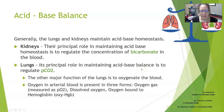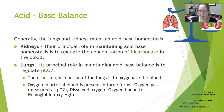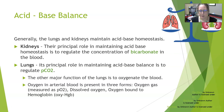The lungs' principal role in maintaining acid-base balance is to regulate the partial pressure of CO2 as a gas. CO2 is considered an acid, and the lungs can either breathe out more CO2 by increasing the breathing rate or retain more CO2 by decreasing the rate of breathing. The lungs also oxygenate the blood; oxygen in arterial blood is present as oxygen gas (partial pressure of O2), dissolved oxygen, and oxygen bound to hemoglobin, which is oxyhemoglobin.